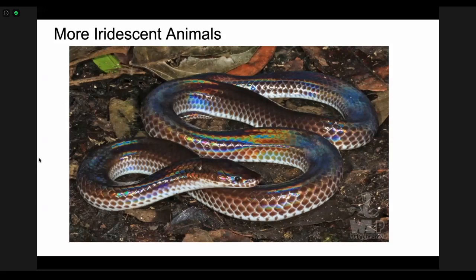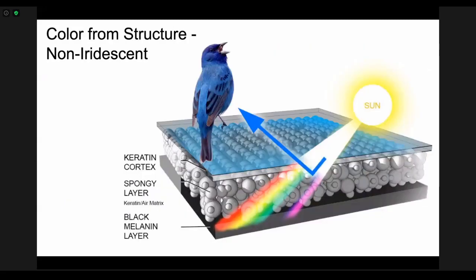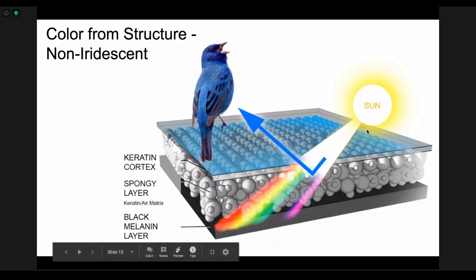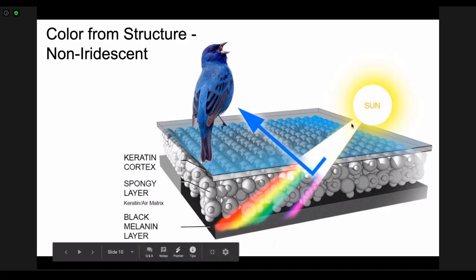Another way that you can get color from structure is with blue color, and it's non-iridescent. One thing about blue color that I think is kind of cool: finding blue pigments naturally occurring in nature is very, very rare. Most of the time when you see blue color out in the animal world, it is blue because of the structure of its feathers or fur or skin. In this case we have that first keratin layer again and then we have a spongy layer of keratin and air and then a melanin layer at the bottom. We have the white light coming from the sun going into this keratin air layer, and all of the other colors are getting absorbed but blue is getting reflected, not because there are blue pigments in this keratin air layer but because of the structure of the keratin air layer. No matter what angle you look at this bird, it's gonna look blue.